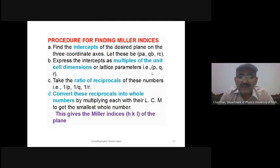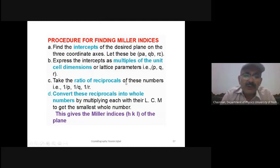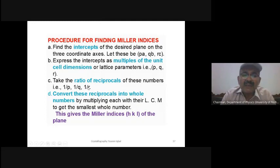If the plane crosses the z-axis at one lattice parameter, the reciprocal is 1/1 = 1. So for a plane with intercepts at 1/2 along x, parallel to y (∞), and 1 along z, the reciprocals are 2, 0, and 1. Multiply by the LCM (2) to make them whole numbers, giving Miller indices 1 0 2. A parallel intercept gives 1/∞ = 0.